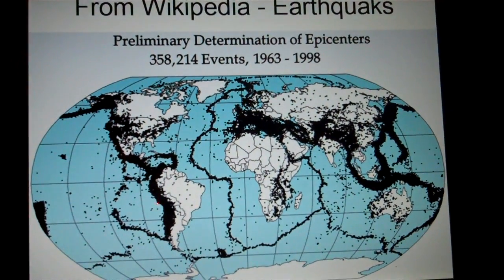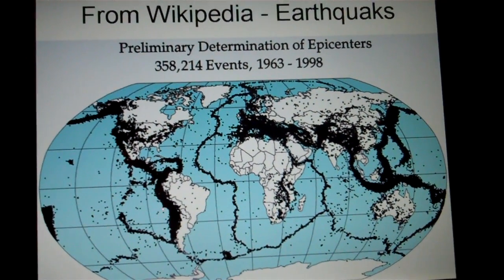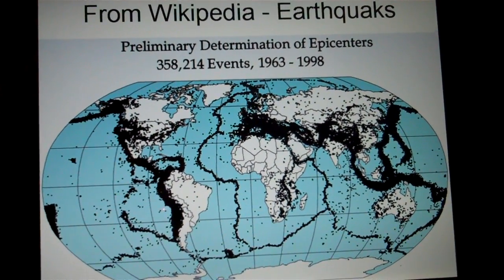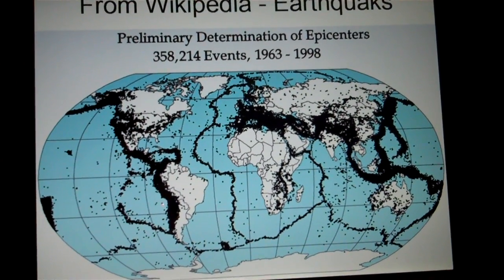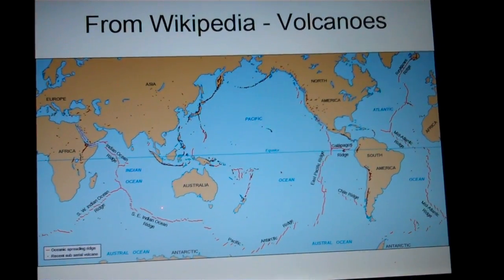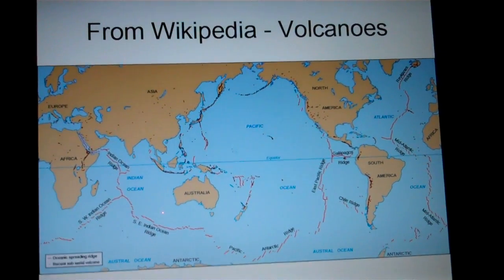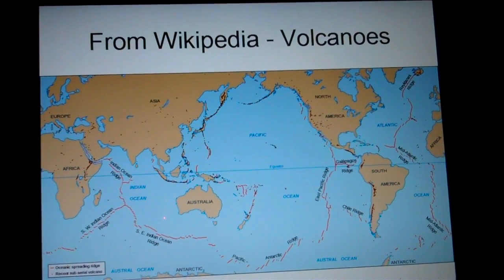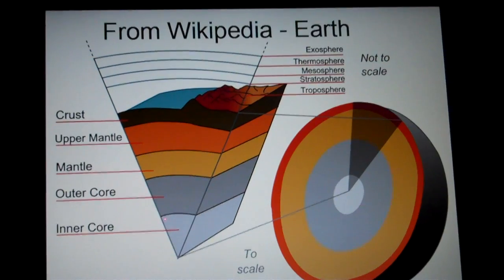Now, where they join, they move. That gives us earthquakes—that's all the black. It also gives us much of the volcanism, the small red dots. Now you can get both where you don't have joints, but most of them, that's where the tectonic plates move.